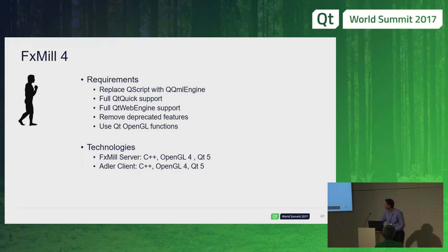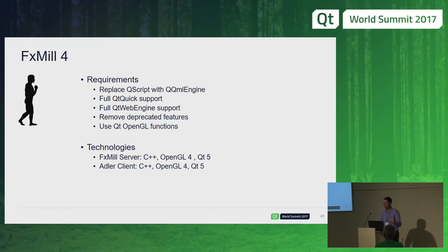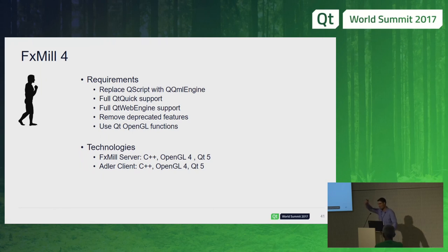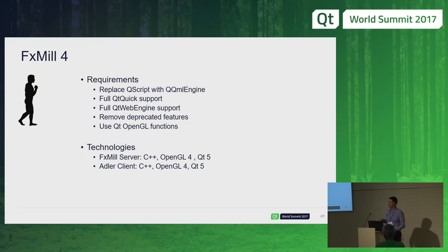I also changed the OpenGL functions — now I'm fully using QOpenGLFunctions and QOpenGL shaders, which saved me a lot of maintenance work since I no longer maintain my own old OpenGL APIs. And there's full Qt Web Engine support. FXMill 4 is what you see running here: it has Web Engine support, Qt Quick, and all the effects from previous versions.